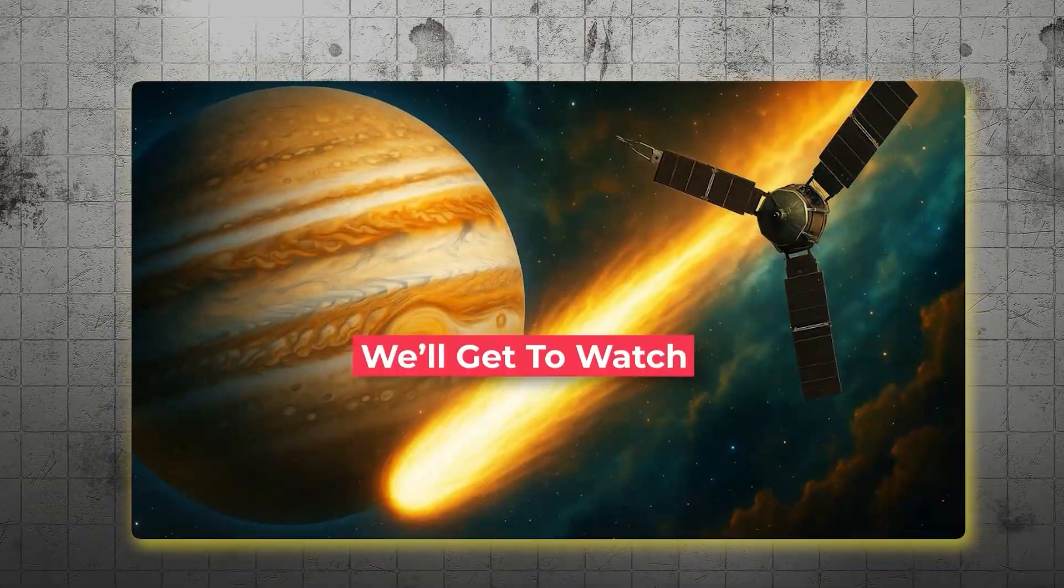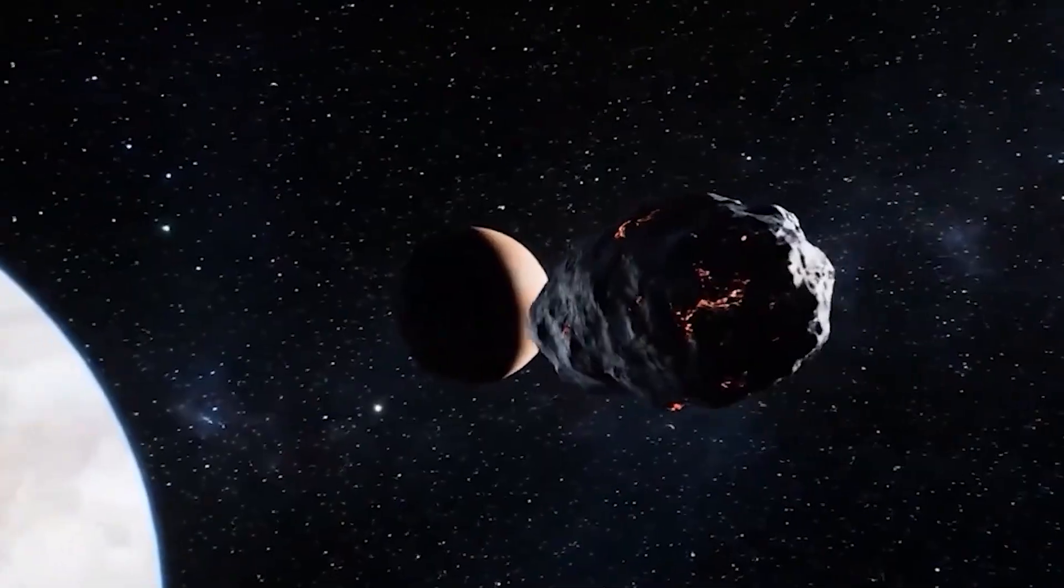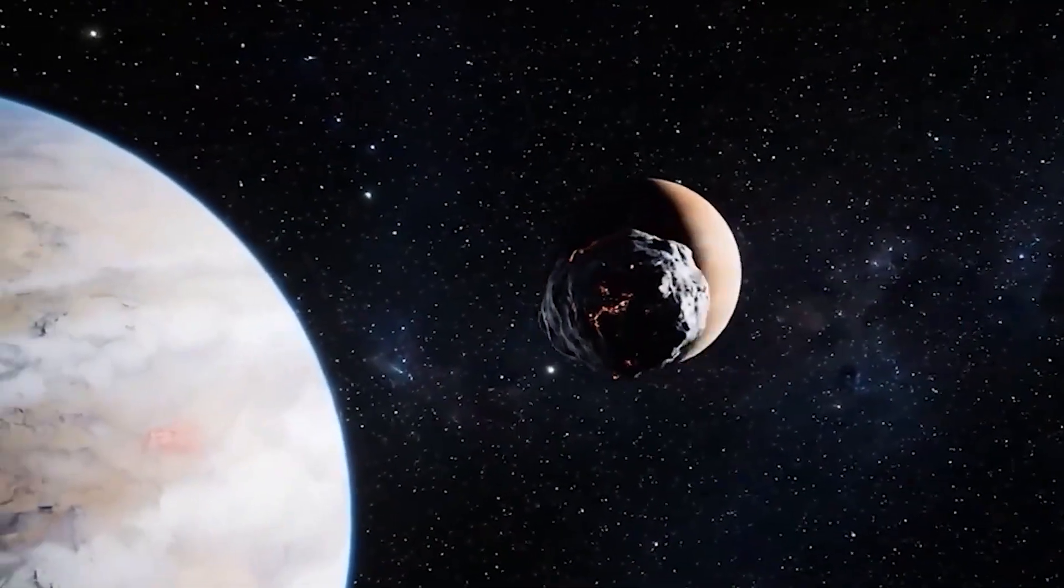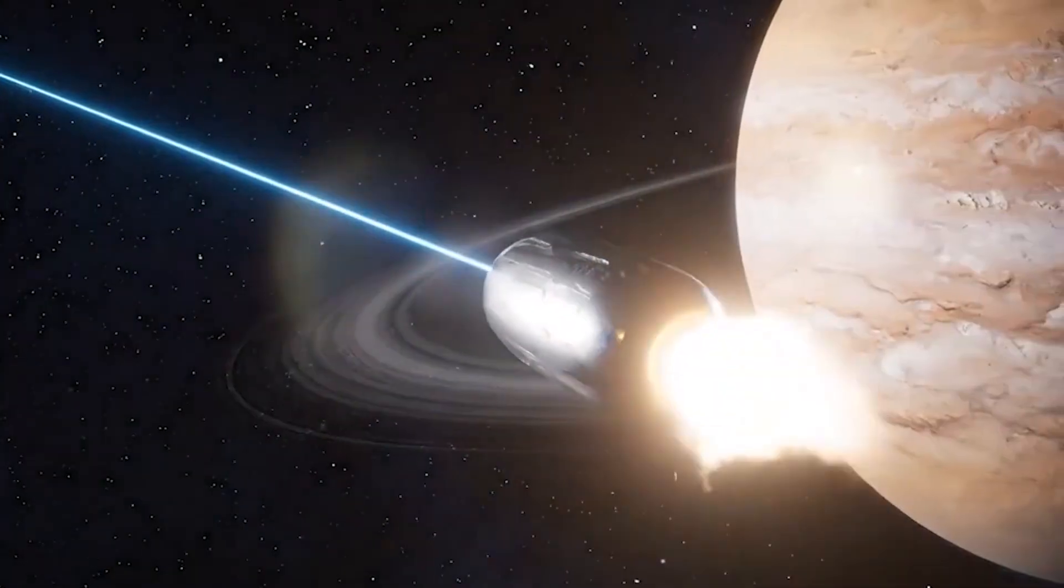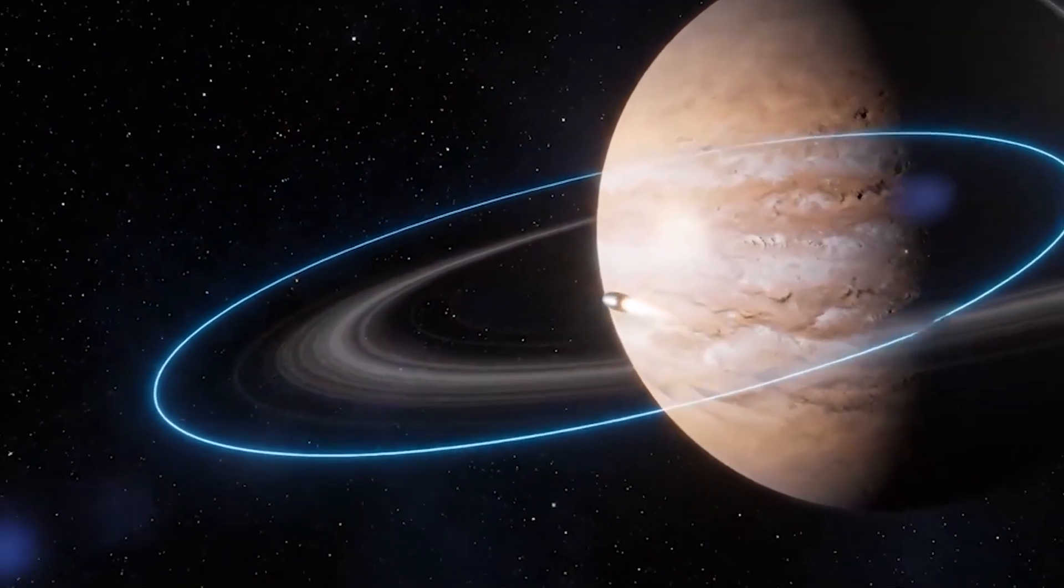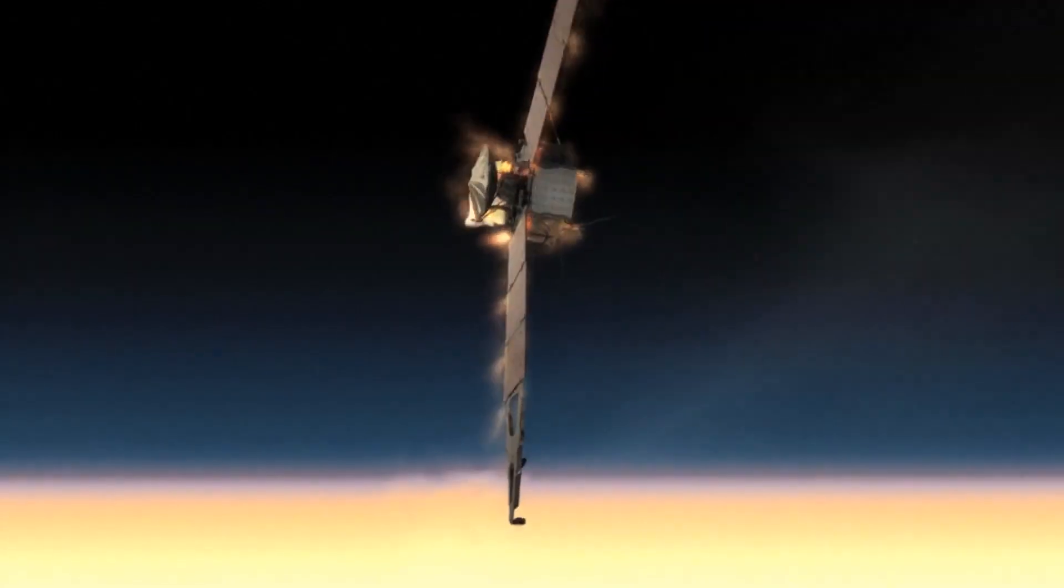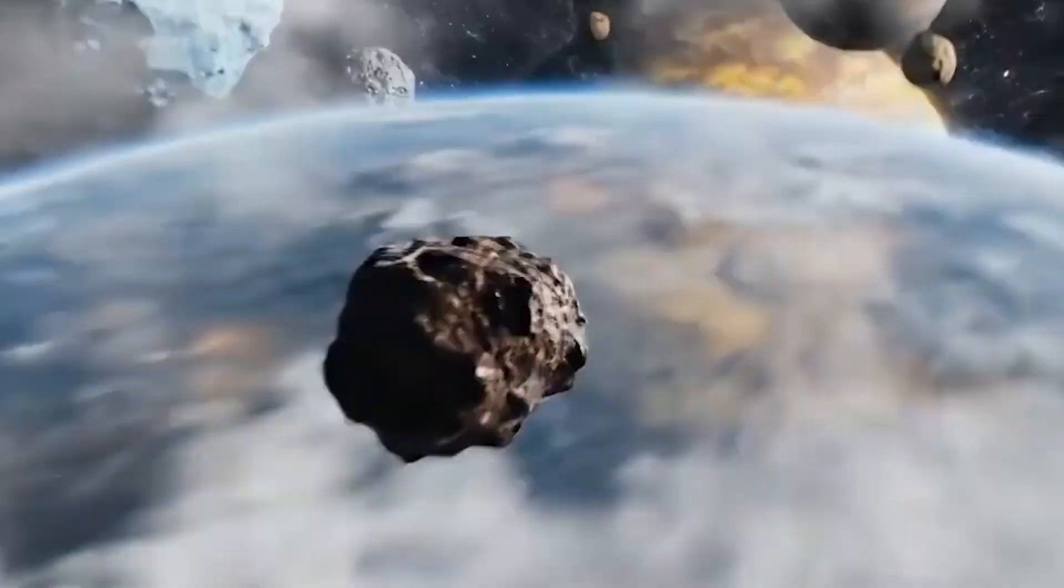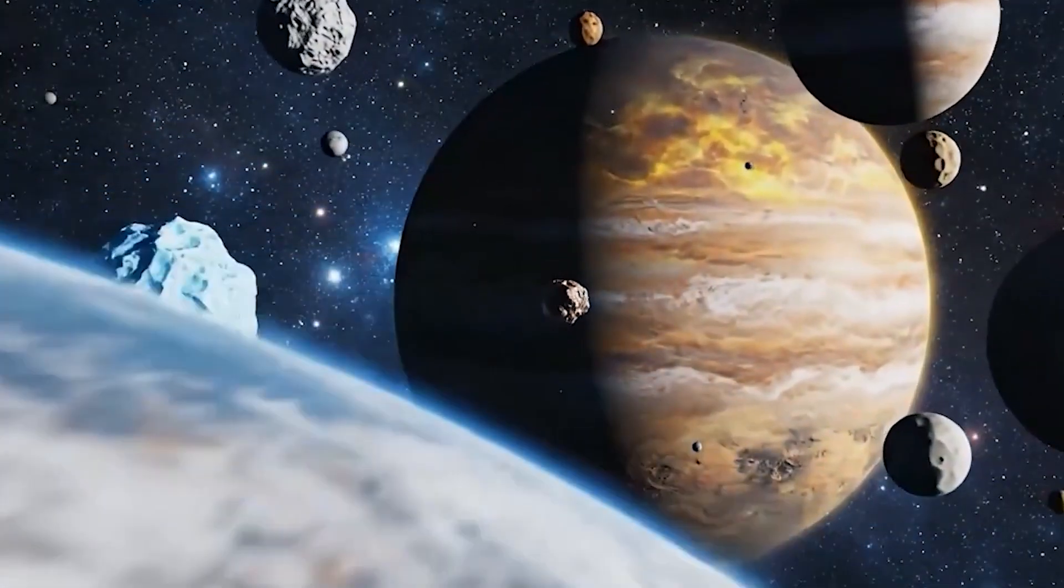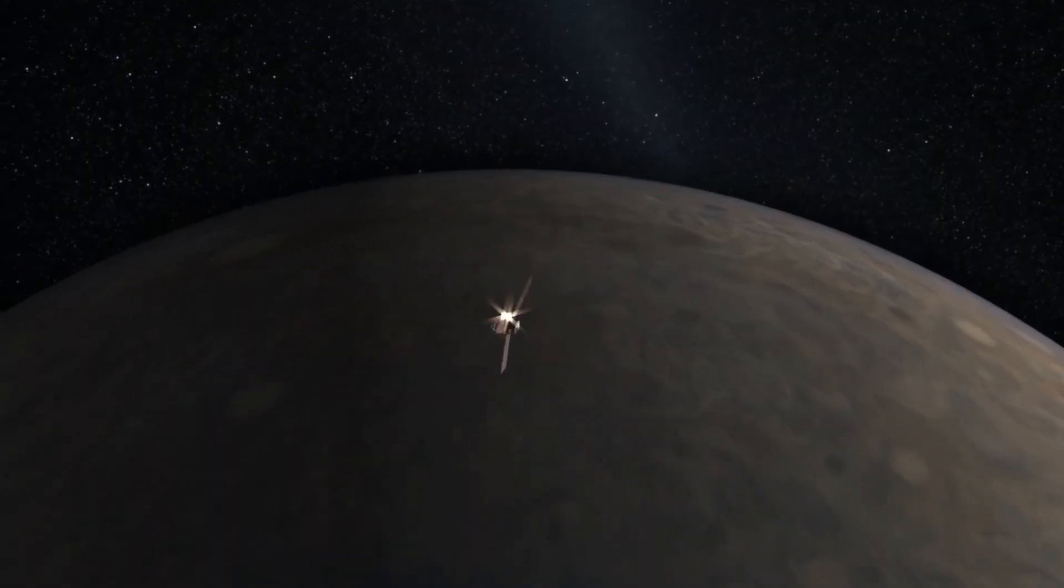We'll get to watch. But here's what really makes this whole situation fascinating. We're not the only ones who think Jupiter is interesting. NASA thinks so too. Because right now, at this very moment, there's already a spacecraft in orbit around Jupiter. It's called Juno. It's been studying the gas giant since 2016. And when 3i Atlas makes its closest approach to Jupiter on March 16th, Juno is going to be there to witness the encounter.